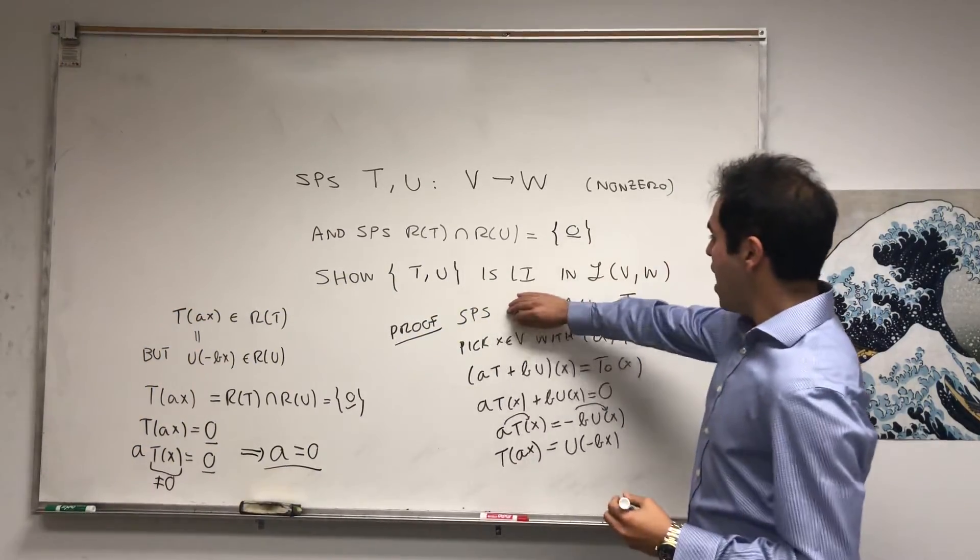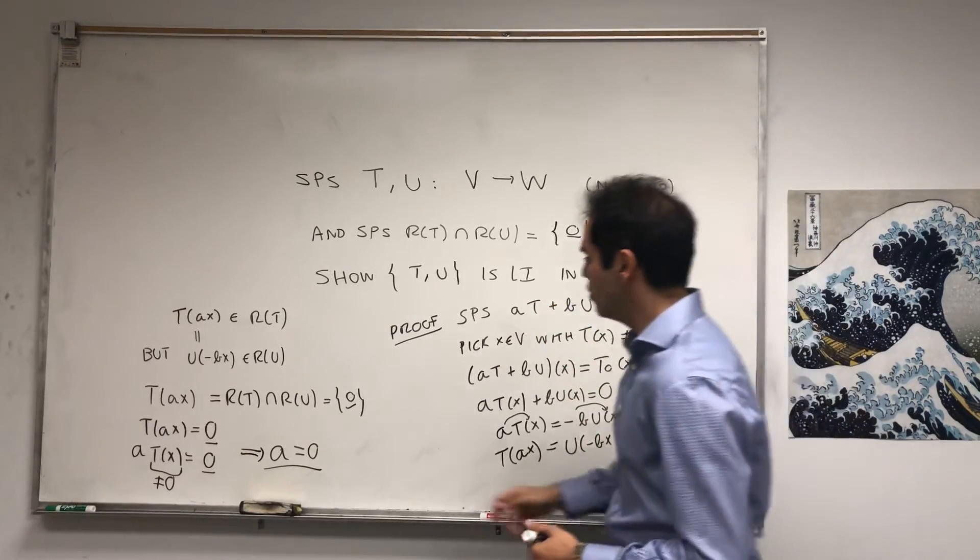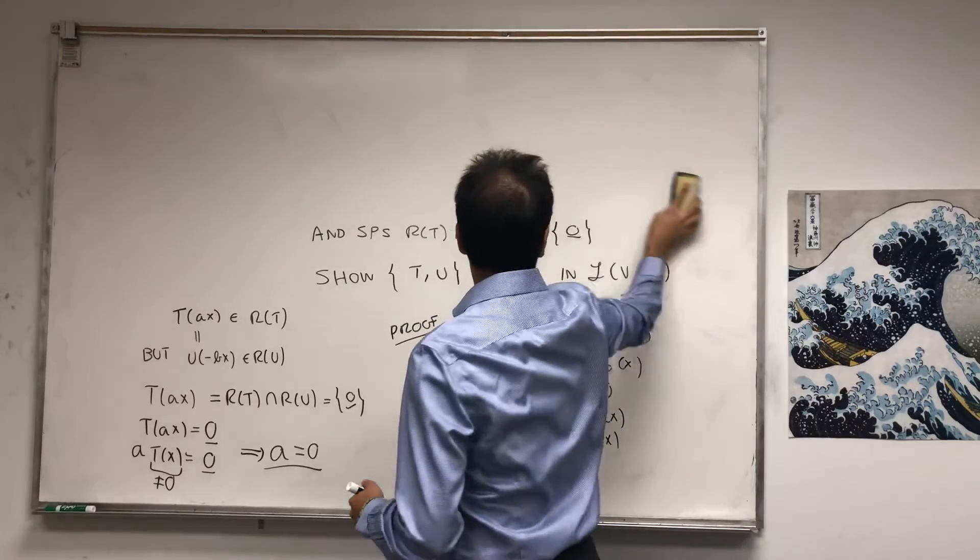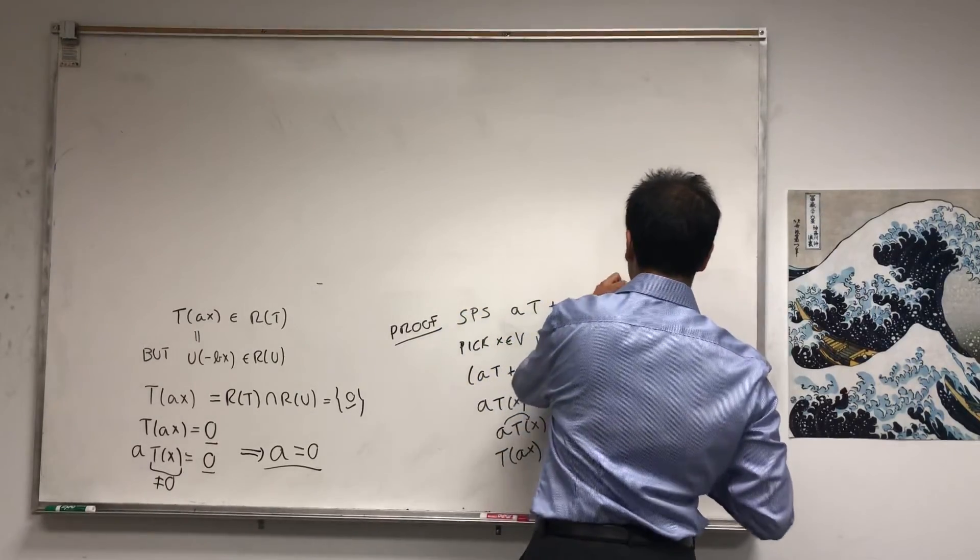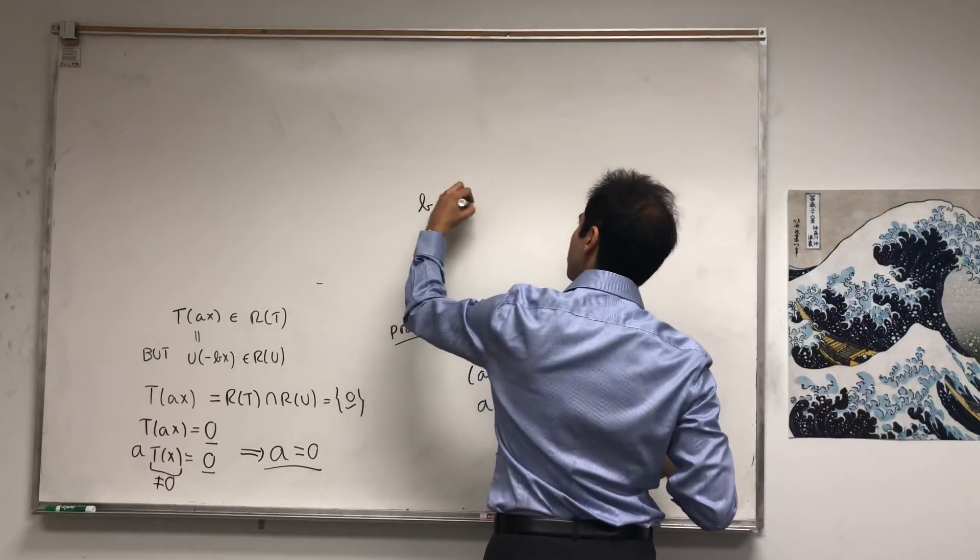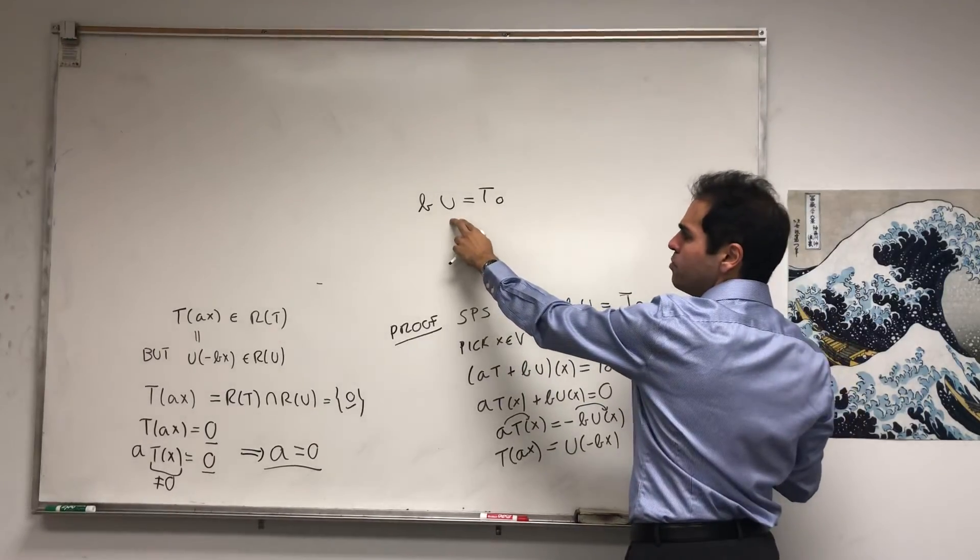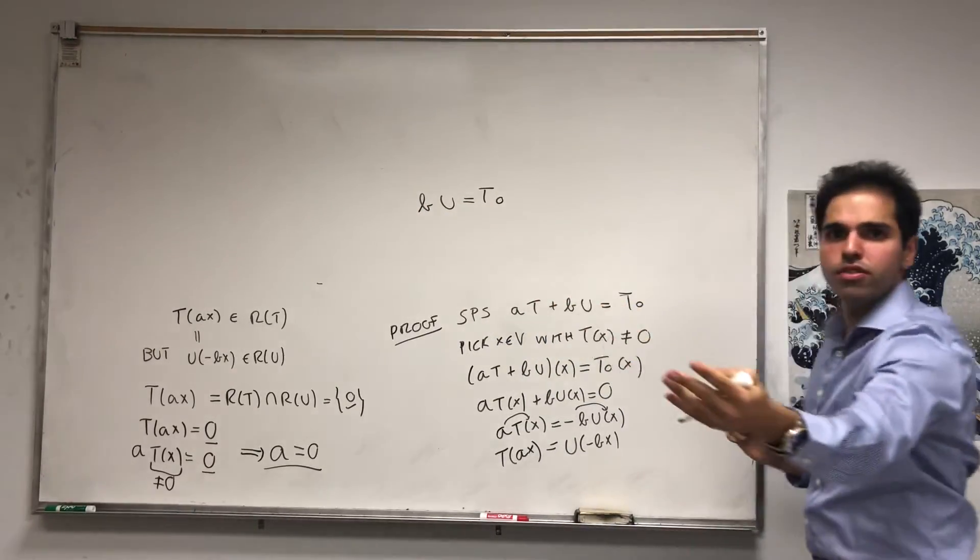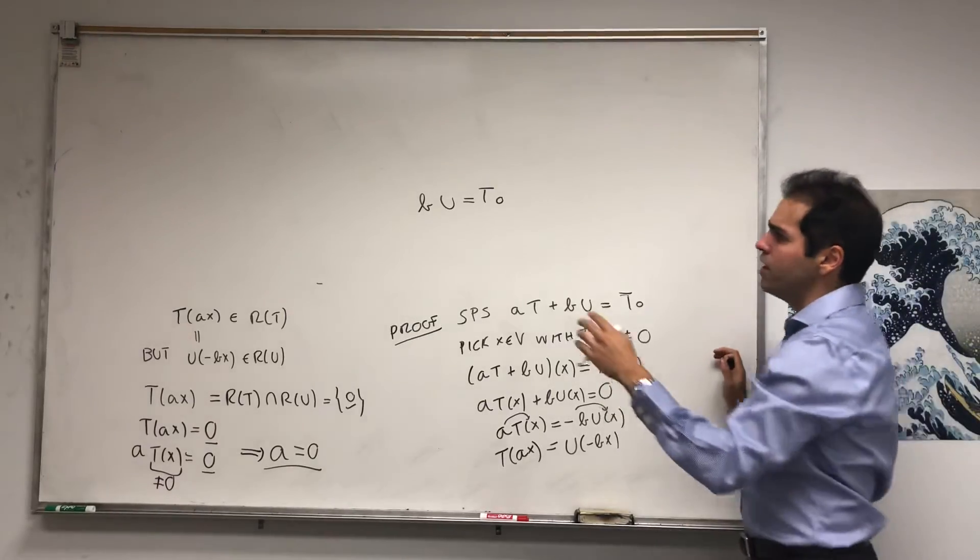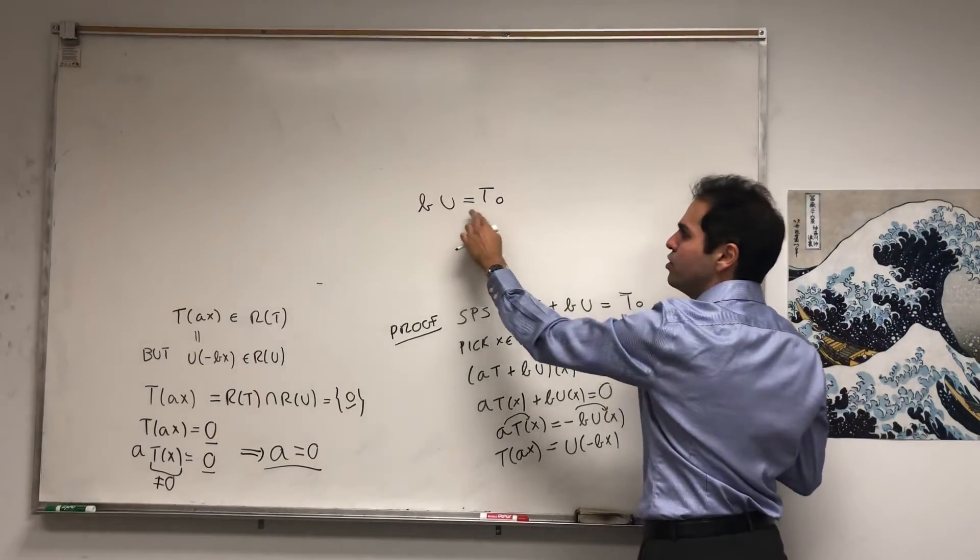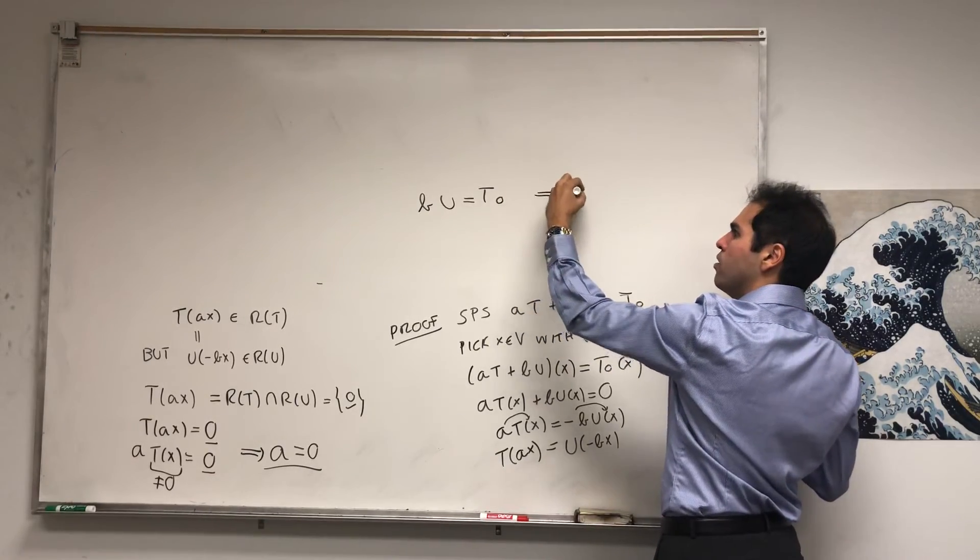In other words, here A is zero. And then what we're left with is B*U is the zero transformation. But again, we assumed that U is not the zero transformation. And that's why the only way a multiple of U could be the zero transformation is if that multiple is zero.